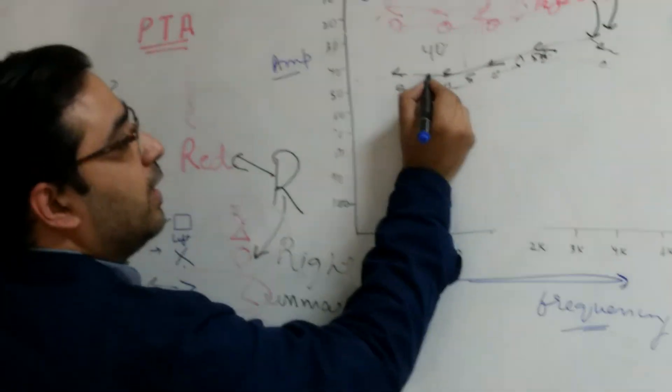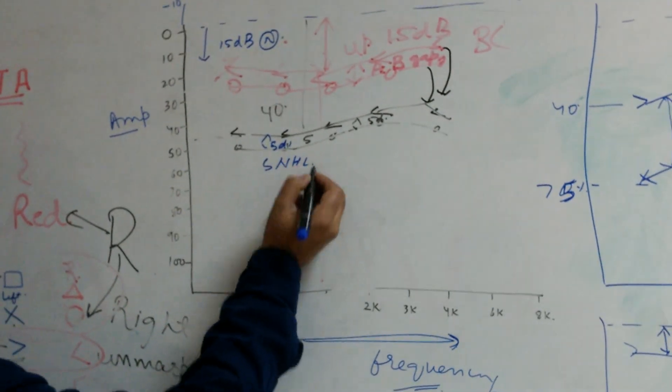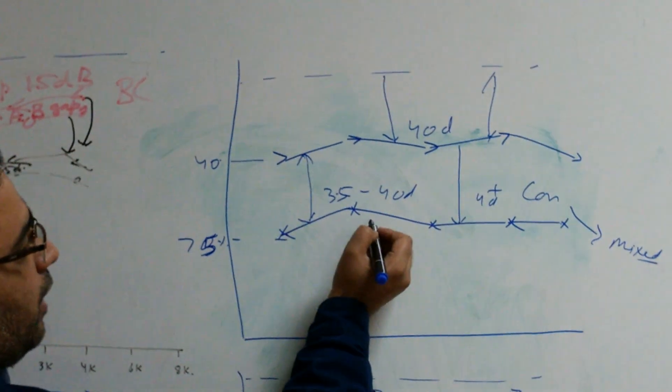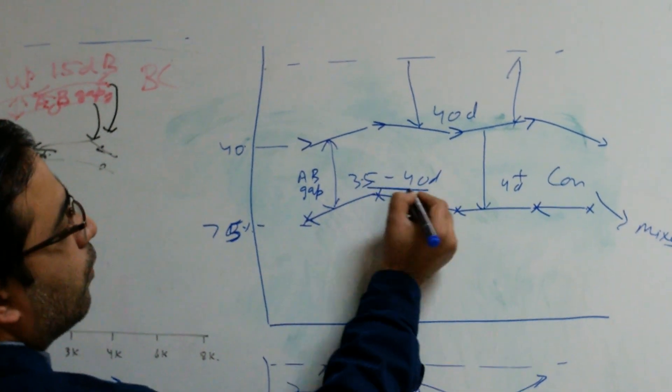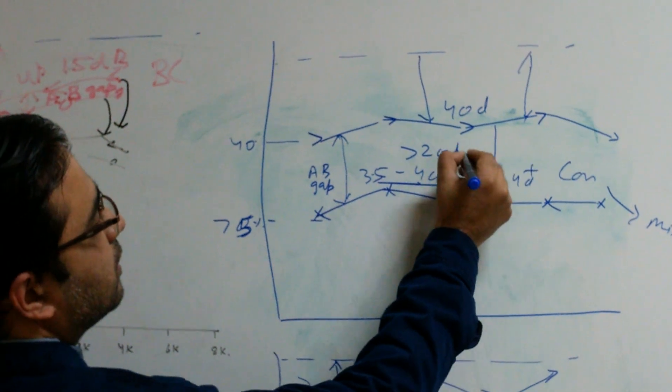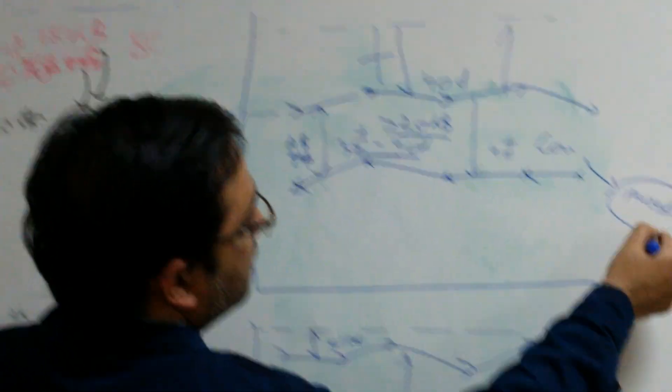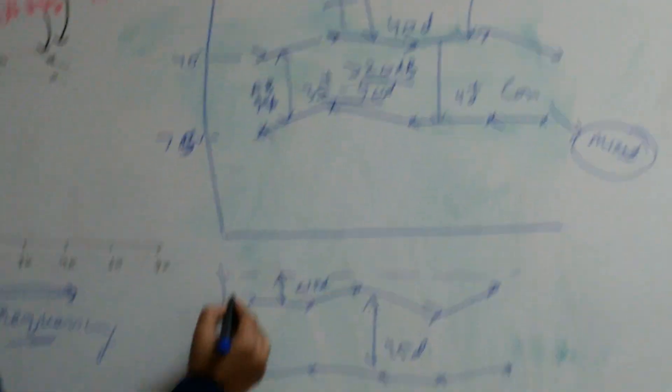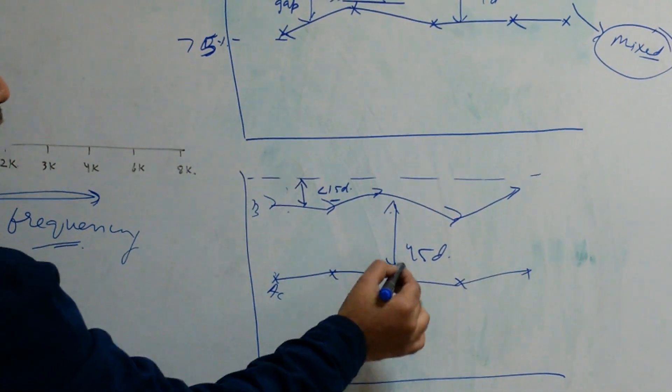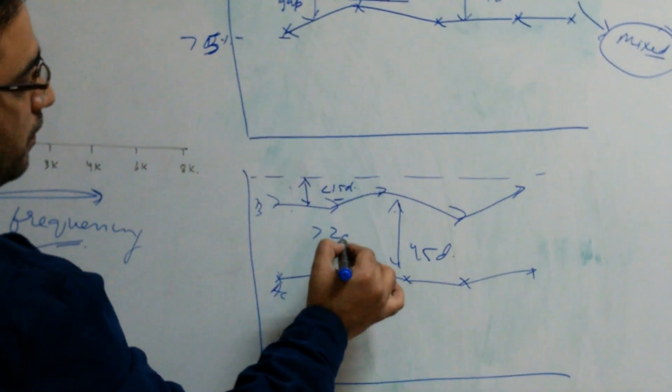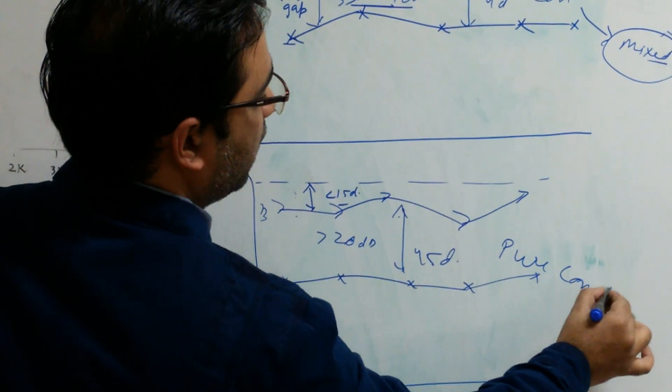So see, both have come down, difference is less than 5 decibels: sensorineural hearing loss. Both have come down plus AB gap is more than 20 decibels: mixed hearing loss. Bone conduction has not come down more than 15 decibels but air conduction has gone down more than 20 decibels: pure conductive hearing loss.